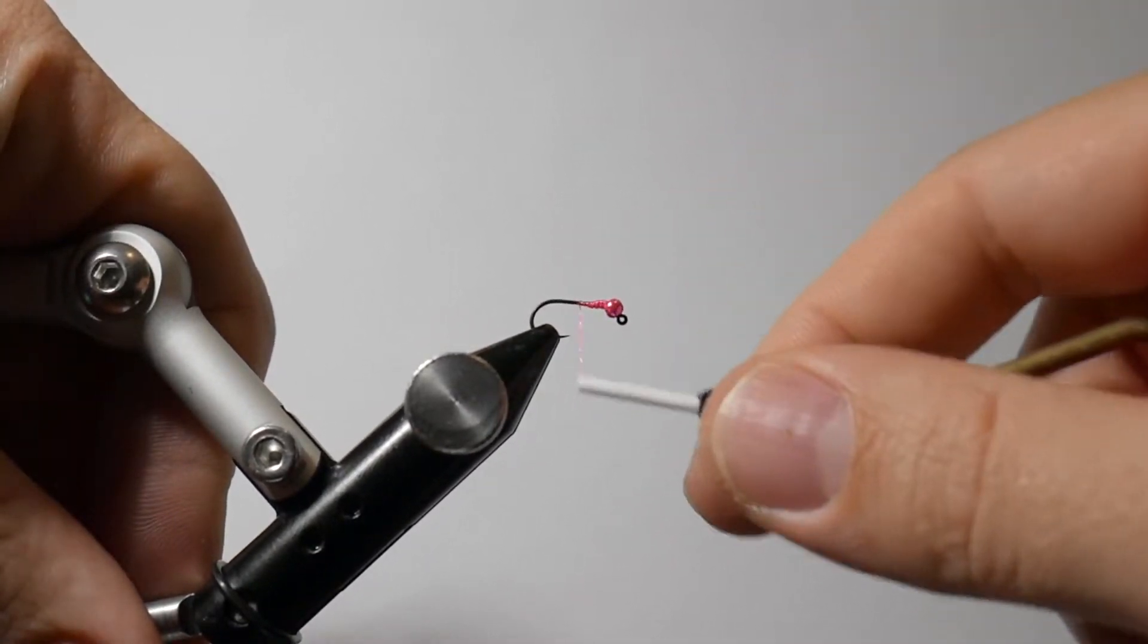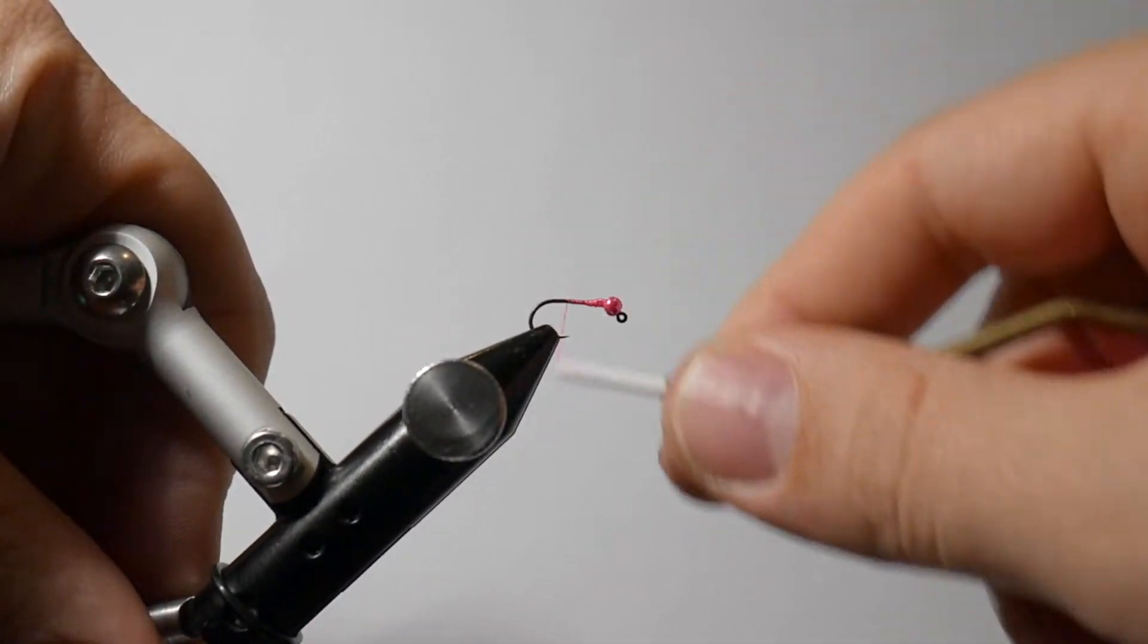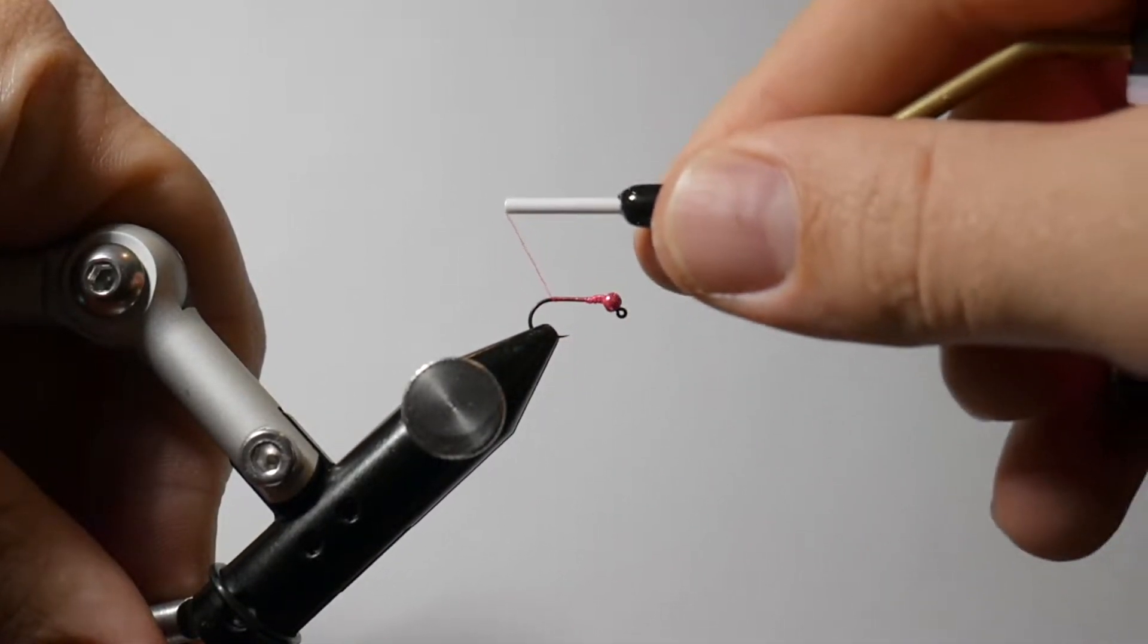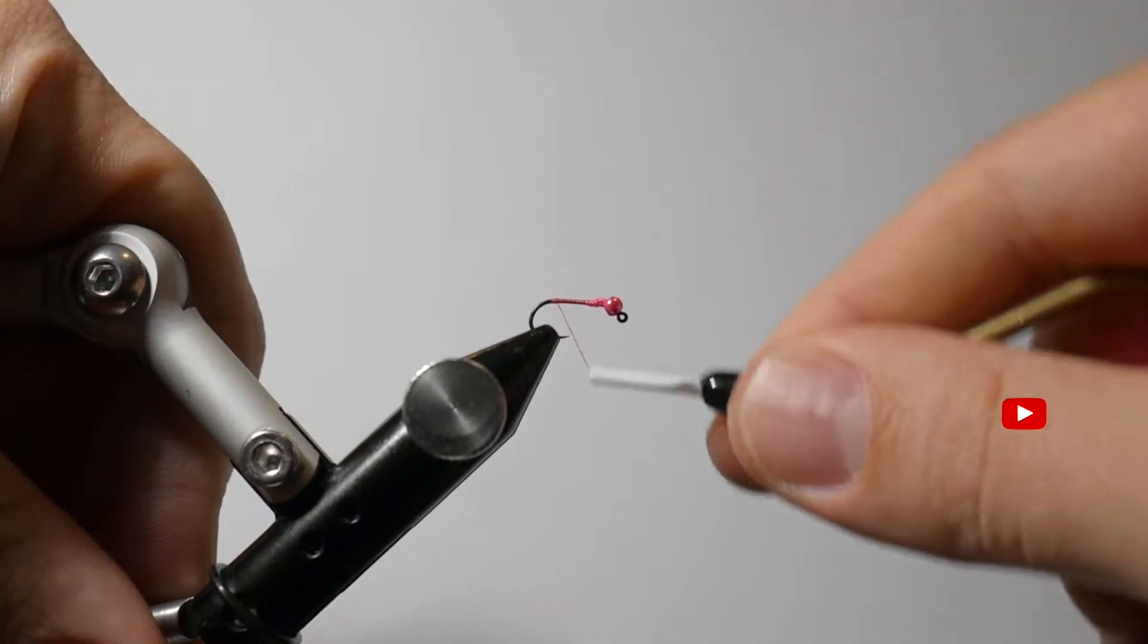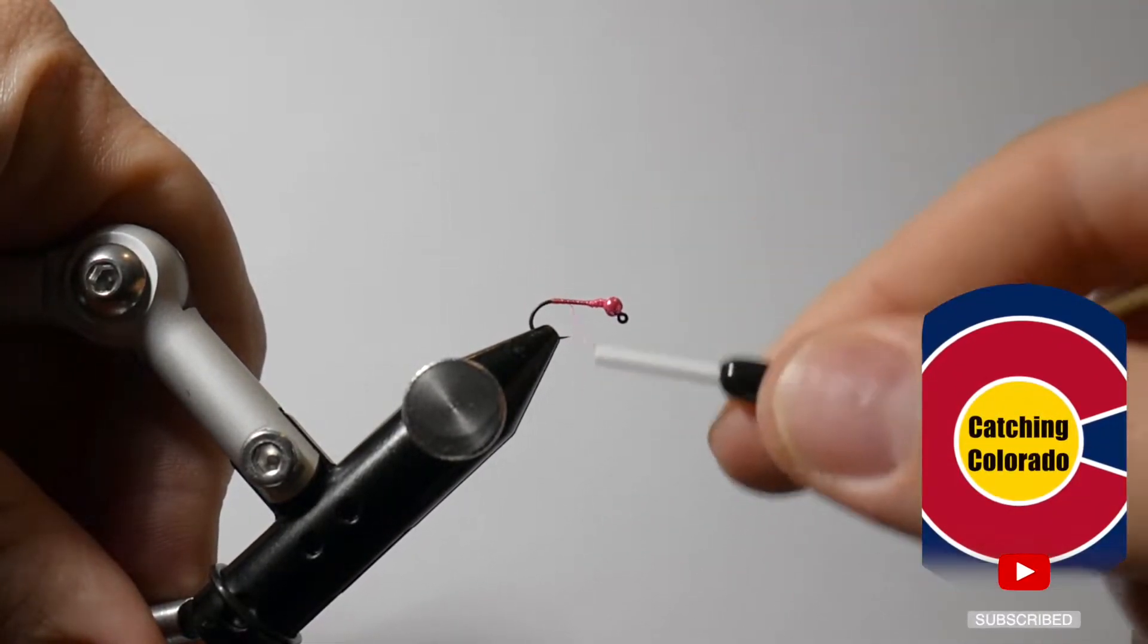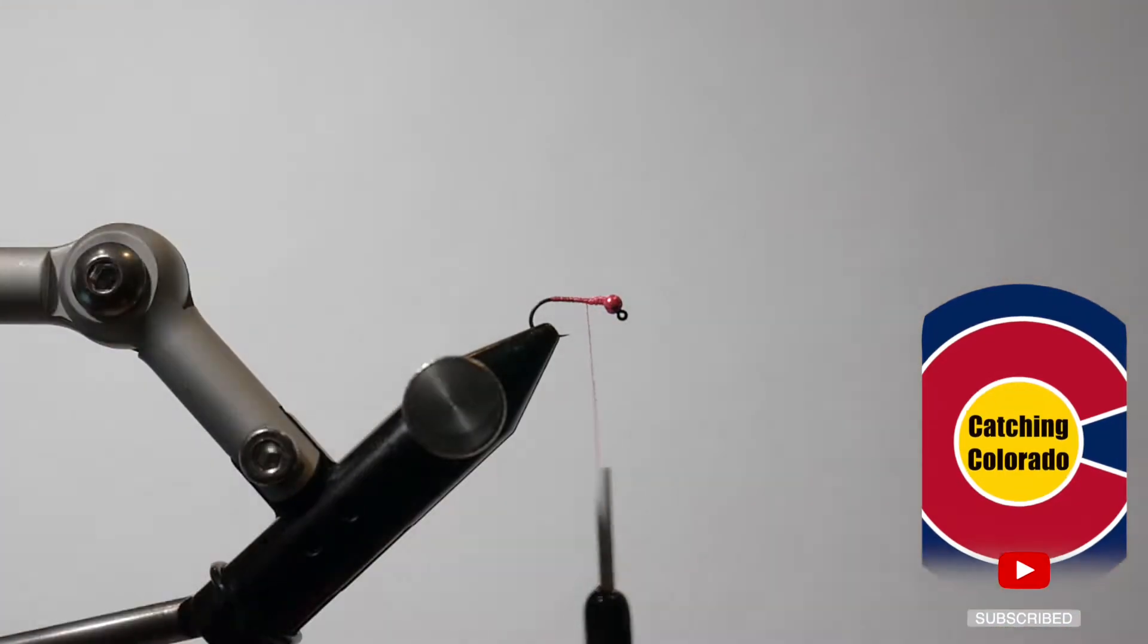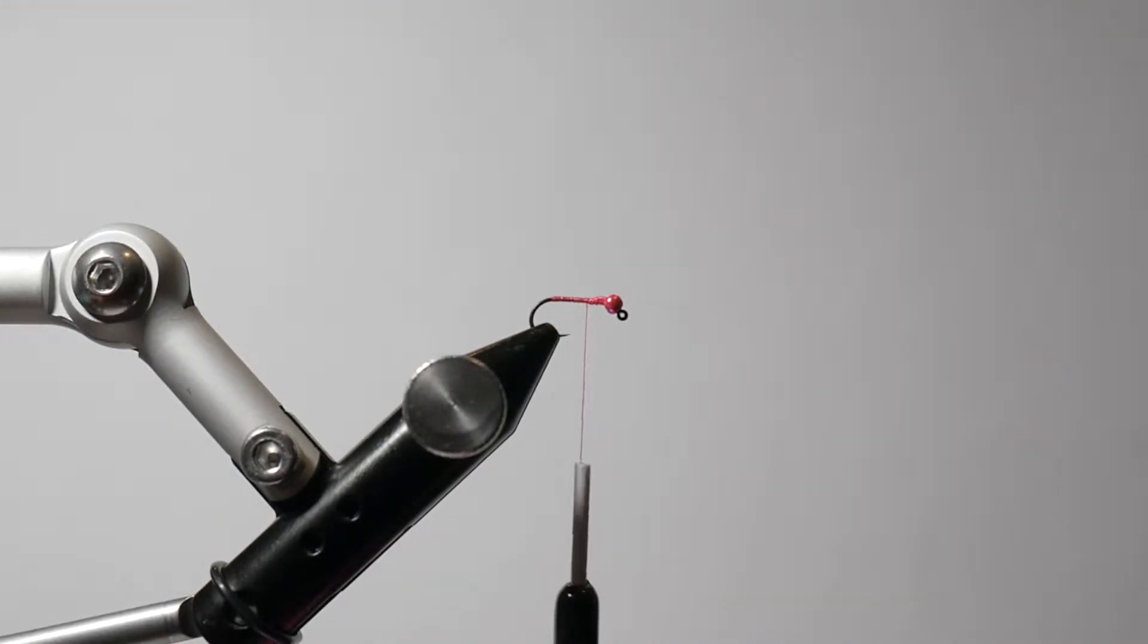What I'm going to do now is just cover the entirety of the hook. We're going to come all the way back, not quite to the bend. I would say that's about good. And then I'm going to bring this body quill back forward and we're going to stop just behind the ramp that we built.